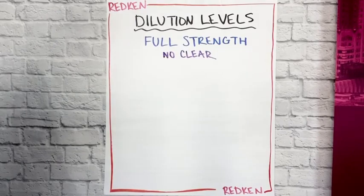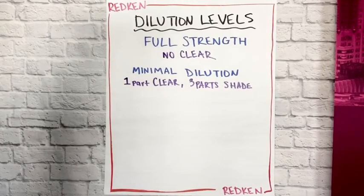First and easiest to remember is Full Strength, which has absolutely no clear at all. Then we have Minimal Dilution, which is one part clear, three parts shade.